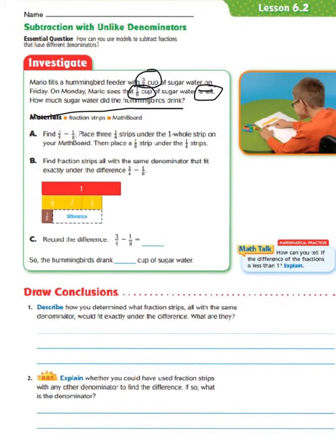Let's jump down to C. It says to record the difference of 3 fourths minus 1 eighths. We know that 'difference' means subtraction. Very similar to the way that we added fractions, we have to find the common multiple for our denominators in order to subtract. We have a 4 as a denominator and an 8 as a denominator, so we need to find the common multiples between those two.